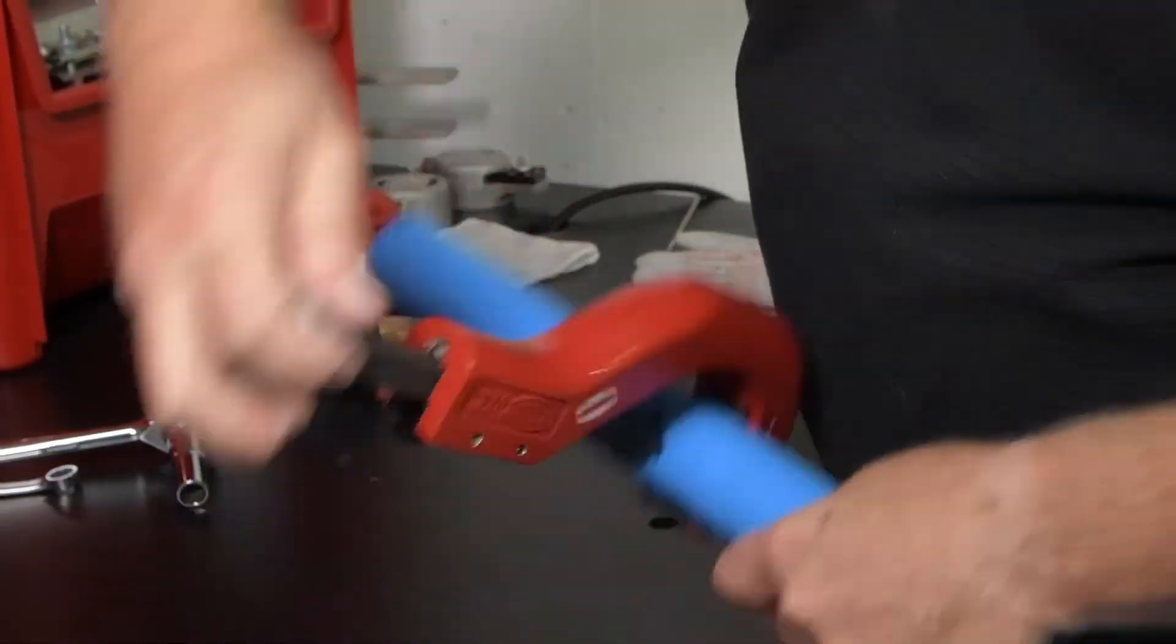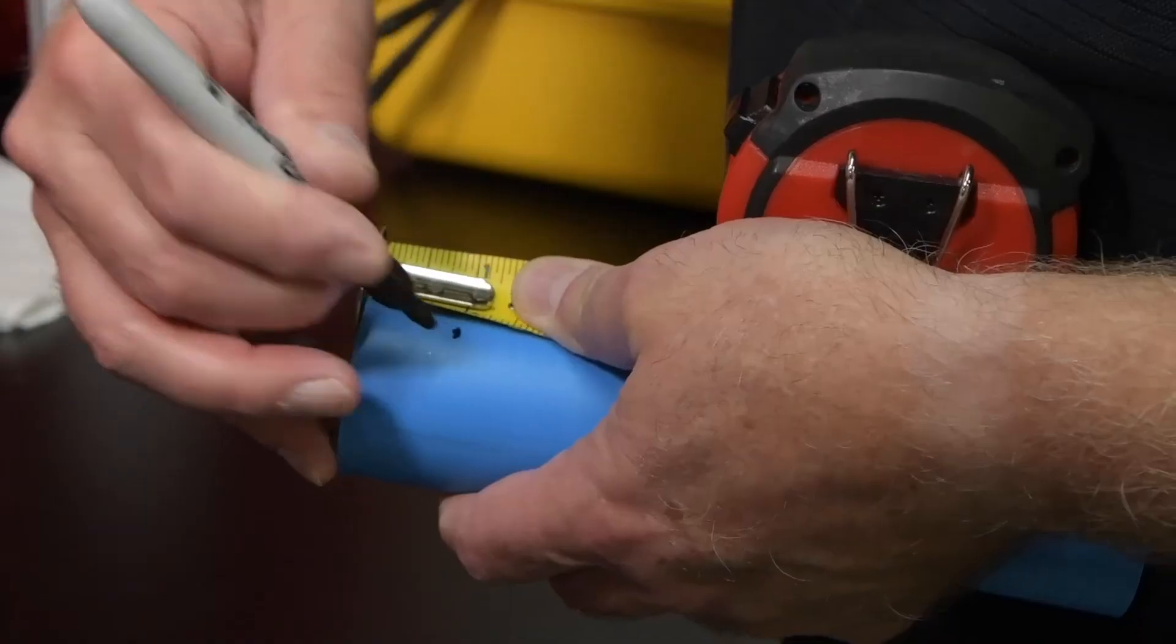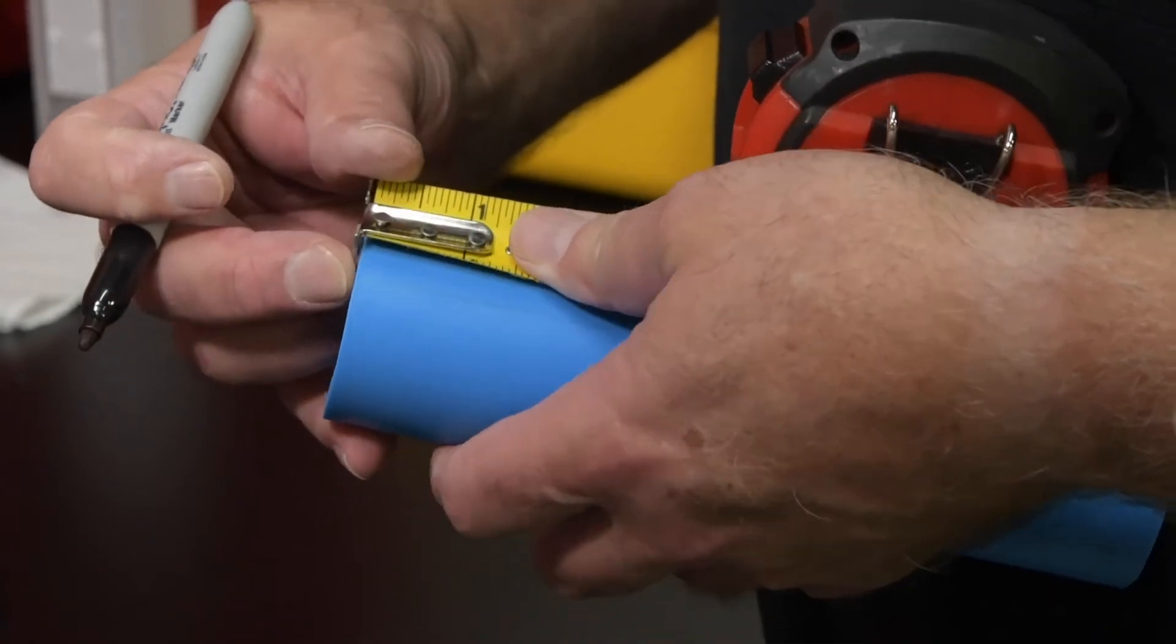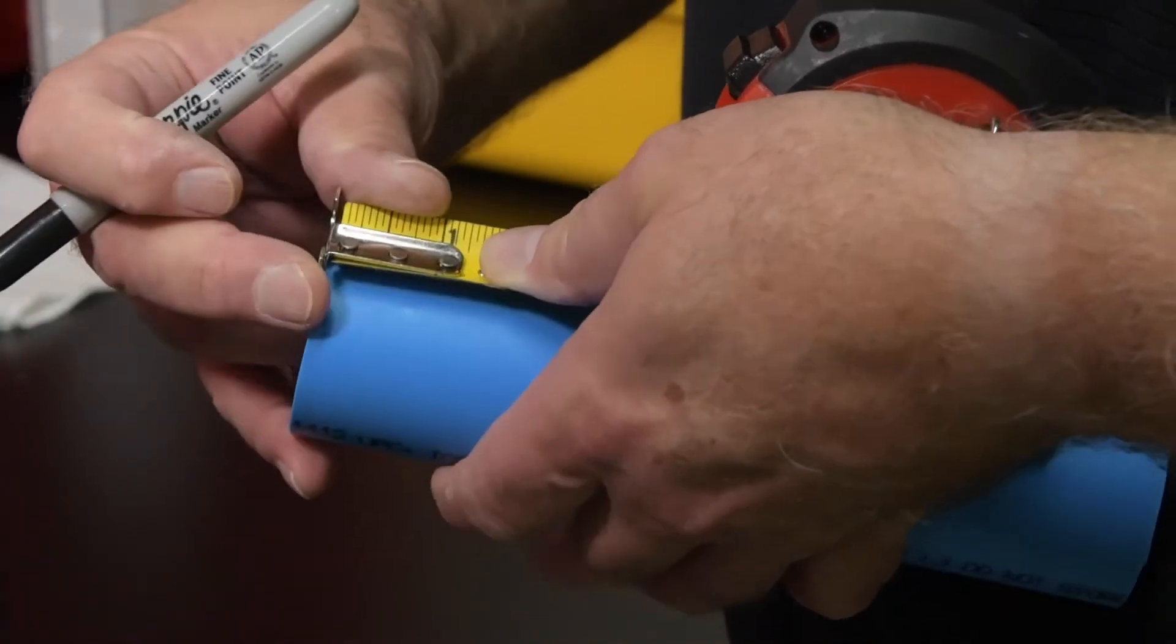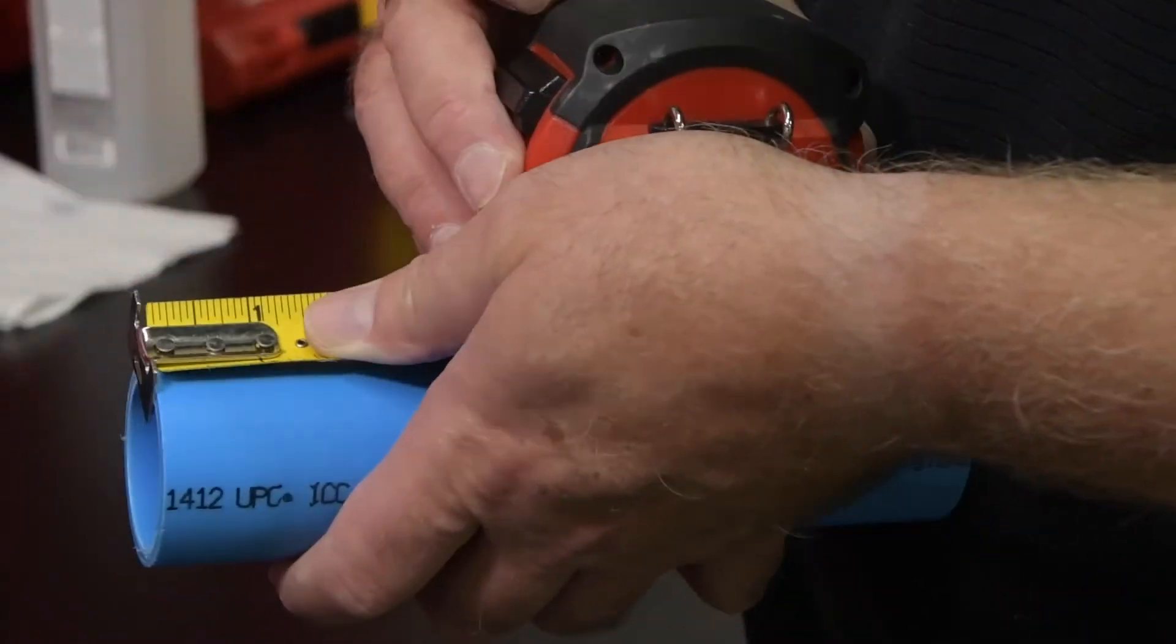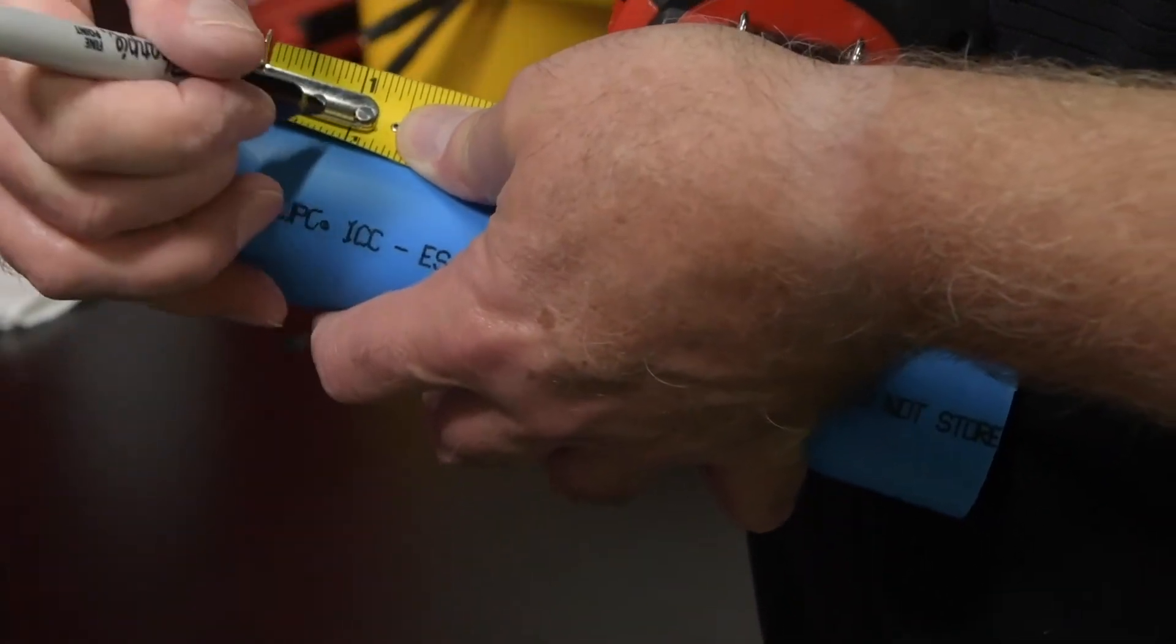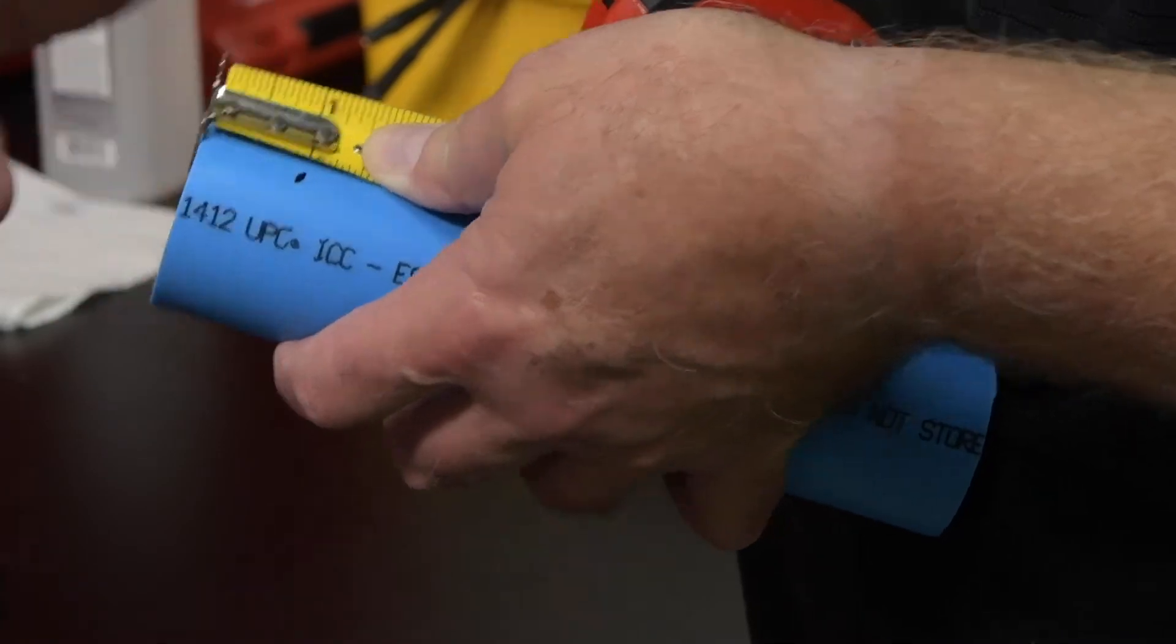Start by cleaning all field cut pipe ends. Following the coupling insertion depth chart, mark the coupling insertion depth from the end of the pipe or fitting to ensure that the coupling is properly positioned during the fusion cycle. Using a marker, mark the pipe according to the coupling insertion depth guide.